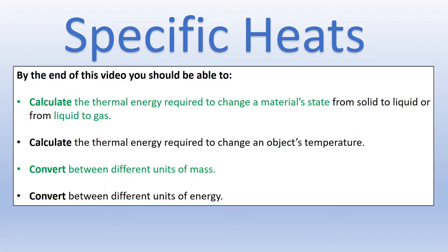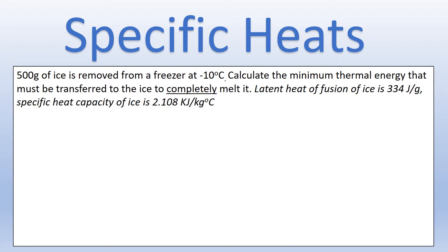In that example we saw a material changing state from liquid to gas, converting between two units of mass, and a little bit of energy unit conversion. Now let's look at another example with a solid to liquid state change and some temperature change as well. We've got 500 grams of ice removed from a freezer at minus 10 degrees Celsius, and we want the minimum thermal energy that must be transferred to completely melt the ice. Melting is the process of turning from solid to liquid at zero degrees, which is the melting point for water.